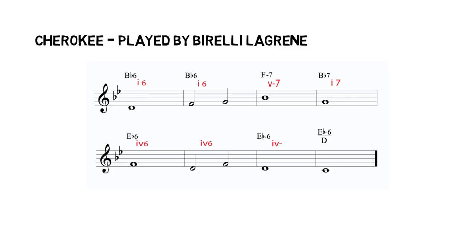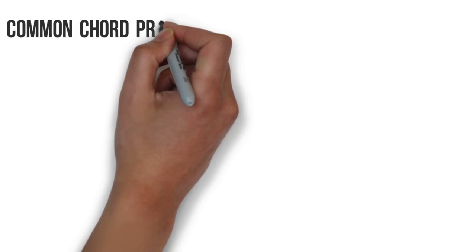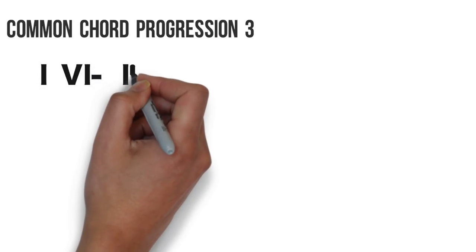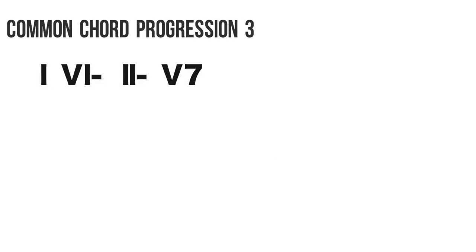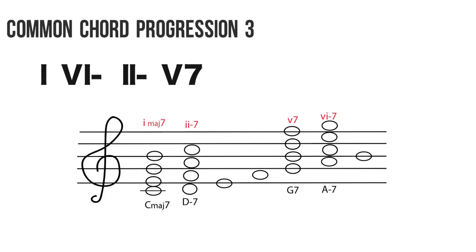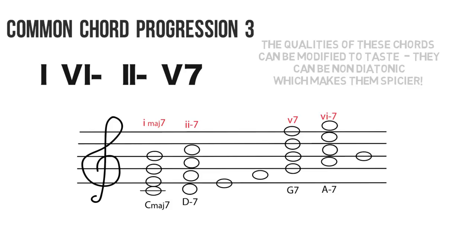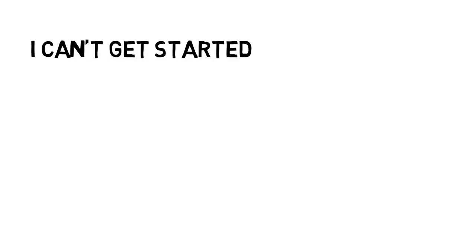Moving on to progression number three: the One-Six-Two-Five, also known as the turnaround. This can be quite easily constructed — on the scale of C major, chords one, six, two, and five. Here's a great example: 'I Can't Get Started,' performed by Lester Young.